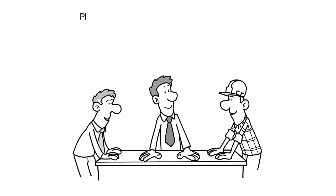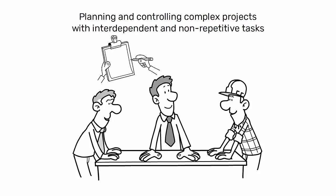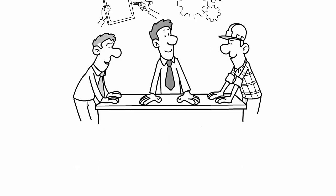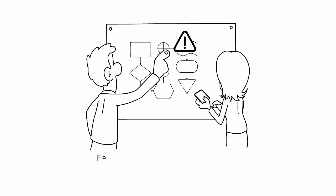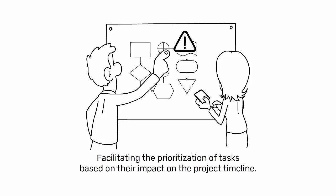PERT is particularly useful in planning and controlling complex projects with interdependent and non-repetitive tasks. It allows project managers to identify critical and non-critical tasks, facilitating the prioritization of tasks based on their impact on the project timeline.